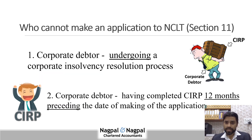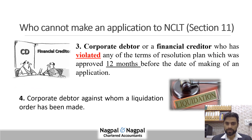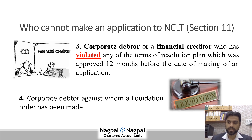Who cannot make an application to NCLT? A corporate debtor who is already undergoing a CIRP process cannot file an application — otherwise it will result in a chain reaction. A corporate debtor who has completed CIRP within the 12 months preceding the date of making the application also cannot file. A corporate debtor or financial creditor who has violated any terms of a resolution plan approved within the preceding 12 months cannot file. And a corporate debtor that is already in liquidation cannot file an application for CIRP.